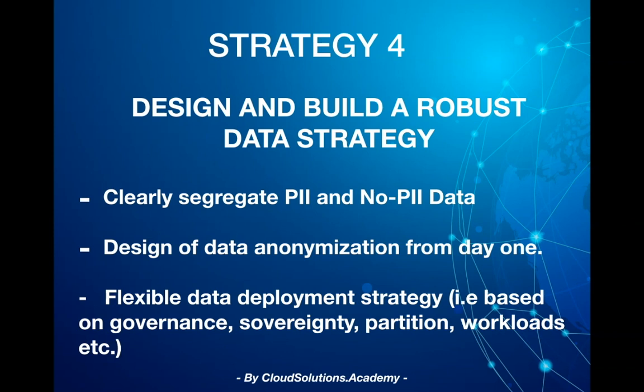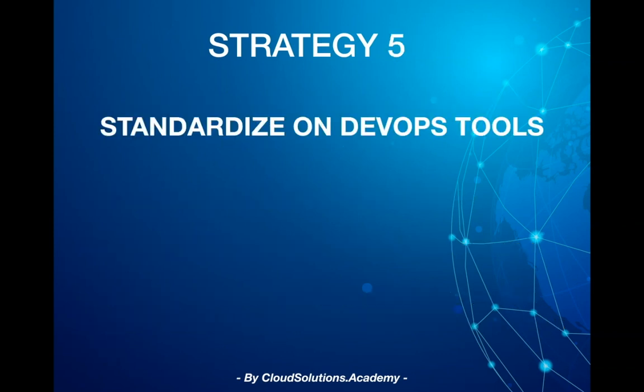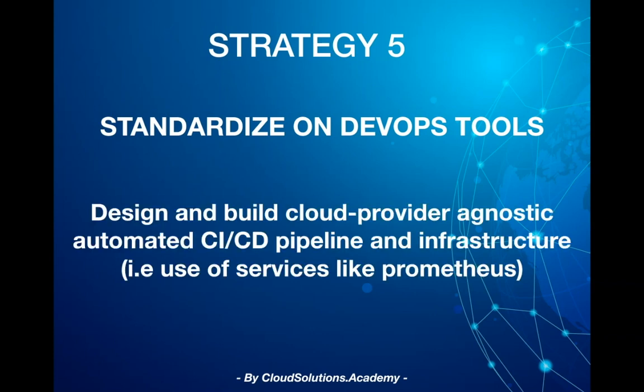The last strategy is to standardize on DevOps tools. As part of the multi-cloud strategy, you design and build a cloud provider-agnostic, automated CI/CD pipeline. For instance, use a tool like Jenkins. And from an infrastructure perspective, use open source solutions like Prometheus, which provides end-to-end monitoring solutions on any environment.